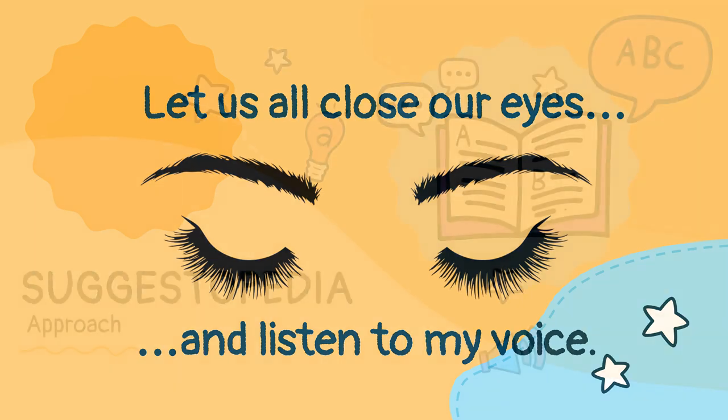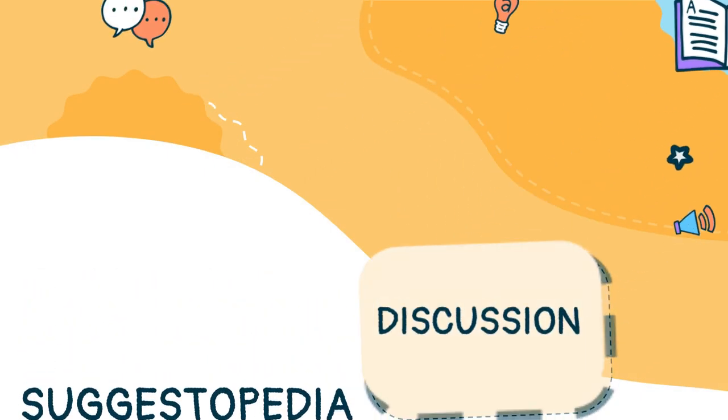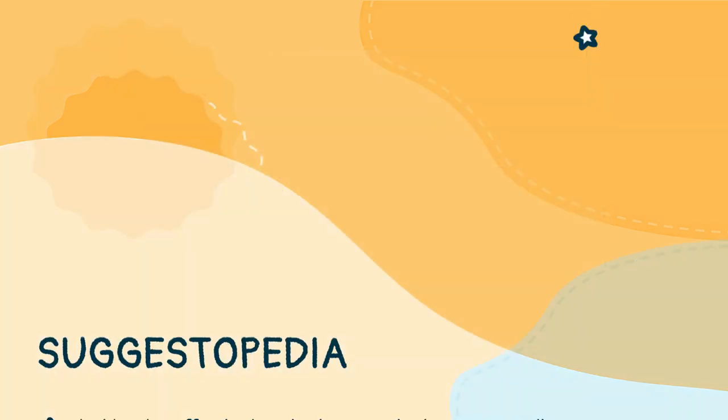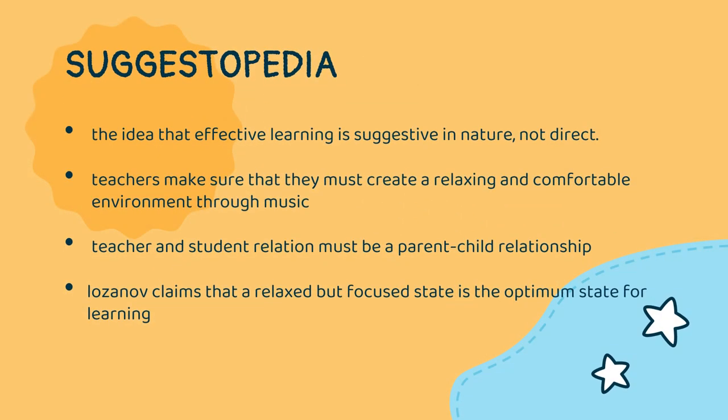So, what is Suggestopedia? Suggestopedia gets its name from the word suggestion in pedagogy. When it was first created in the 1970s, the approach utilized positive suggestions to teaching. It is the newest of the six primary foreign language teaching methods known to language education professionals.